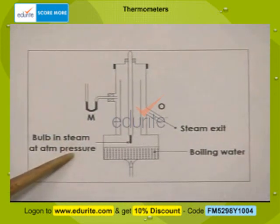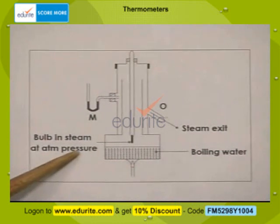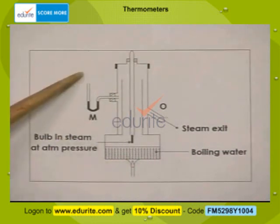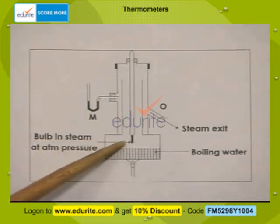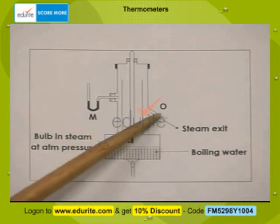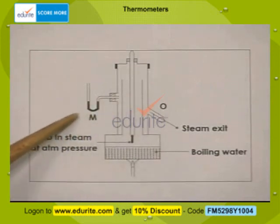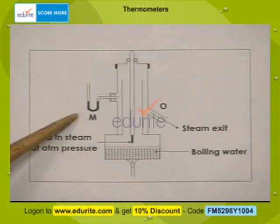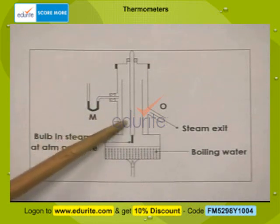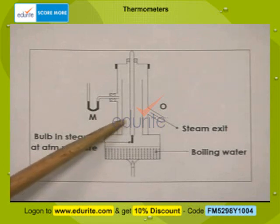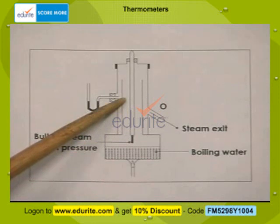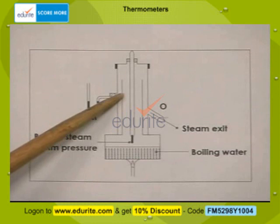This is an experimental setup to fix the upper fixed point. The thermometer is kept such that it is not touching the boiling water but is surrounded by steam. The excess steam goes out through an opening O. A manometer M is used to measure the pressure of steam; ensure that the pressure of the steam inside is the same as the normal atmospheric pressure. Mercury in the thermometer expands and rises in the capillary; when the mercury level becomes stationary, a mark of 100 degree Celsius is made on the stem of the thermometer.